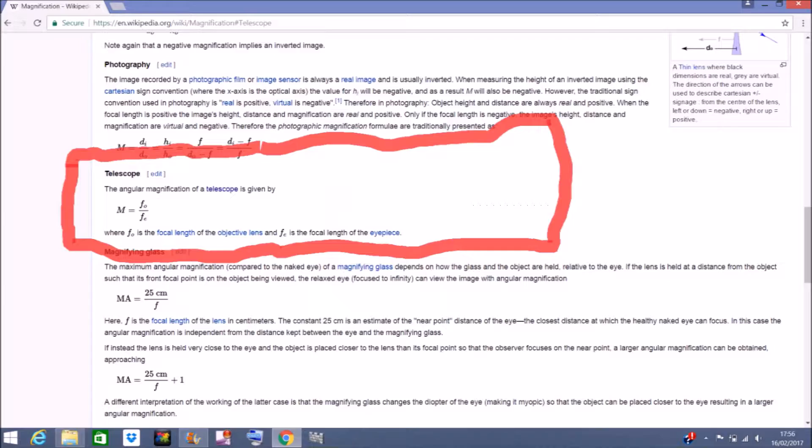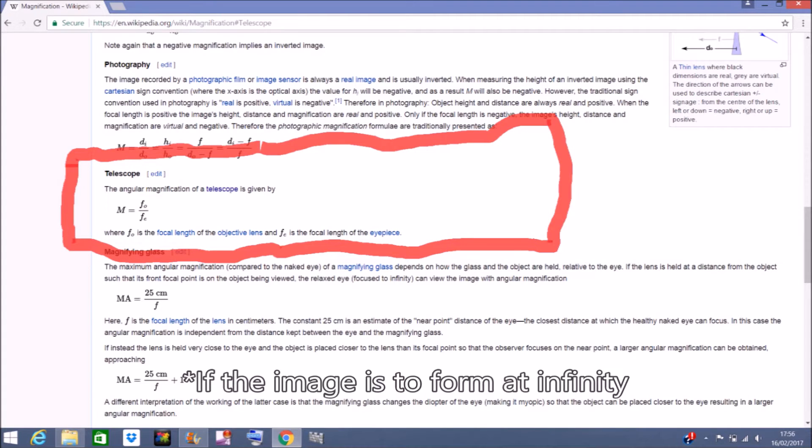So how does it work? The magnification of a telescope is given by the focal length of the objective divided by the focal length of the eyepiece.